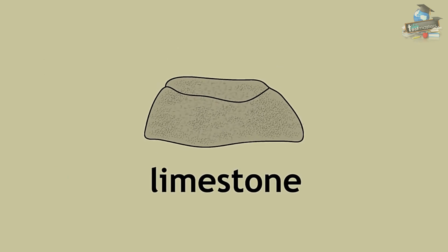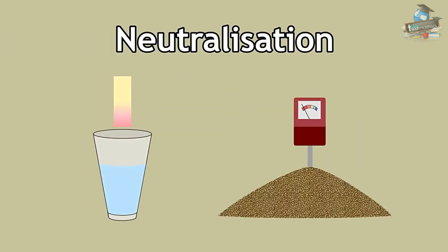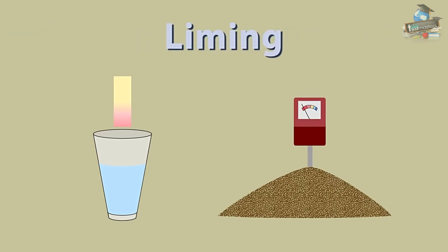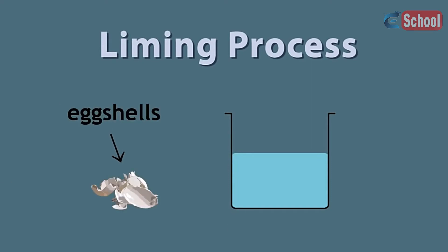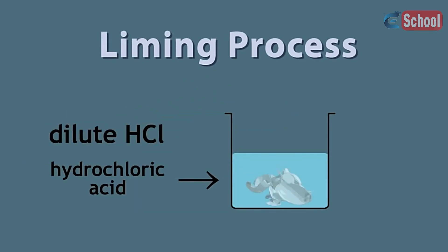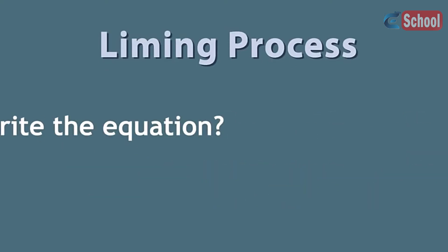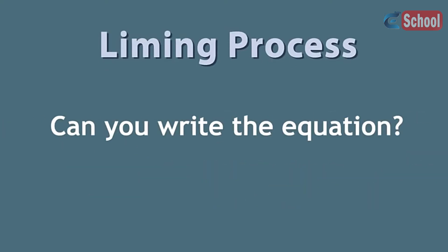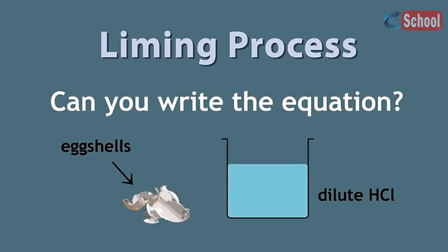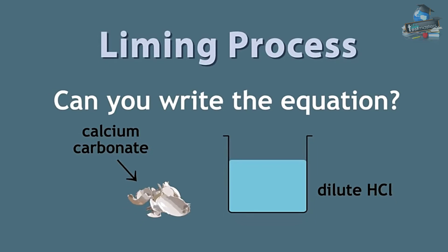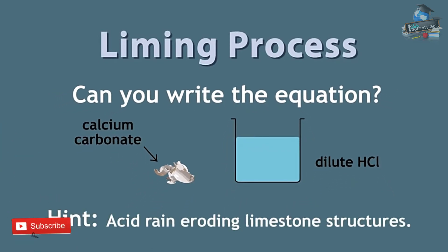Limestone can also be used to neutralize acidic waters and soil. This process is known as liming. We can mimic this liming process by placing some eggshells into a very dilute solution of hydrochloric acid. You can observe that the eggshells will dissolve in acid and a gas is produced. Can you write the equation for this reaction? Keep in mind that these eggshells are composed primarily of calcium carbonate. It's very similar to the reaction that occurs when acid rain erodes limestone structures. Please pause and resume when ready.